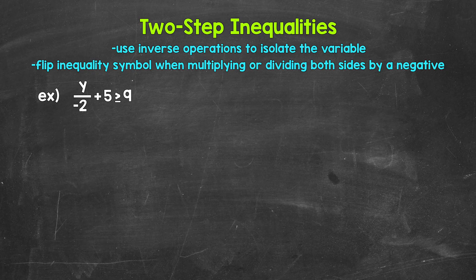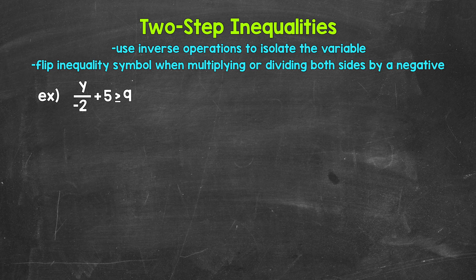Let's jump into our example where we have y divided by negative two plus five is greater than or equal to nine. Just like we would do if this was a two-step equation, we want to undo the addition first. We go in the reverse order of operations to undo the operations and isolate the variable. So we need to undo the addition first and then the division.